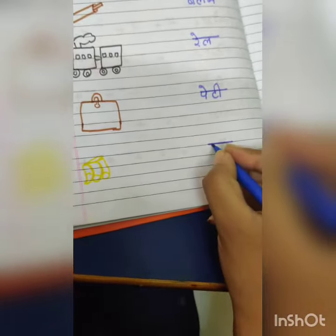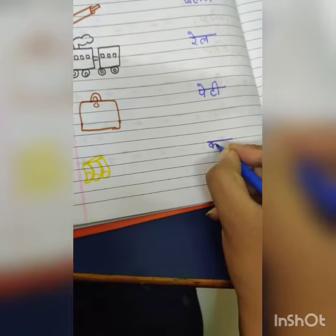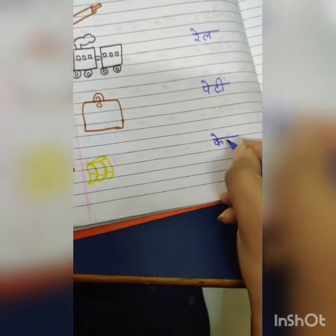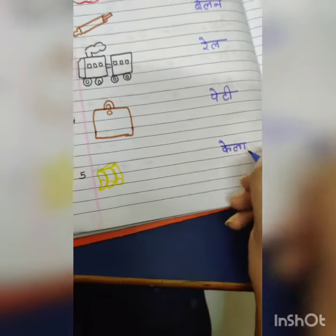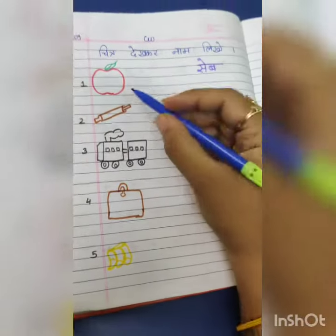And the last is kela: ka mein a ki matra — ke, then la mein a ki matra — la, kela.